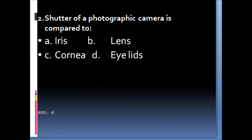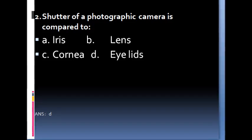Shutter of a photographic camera is compared to: a. Iris, b. Lens, c. Cornea, d. Eyelids.